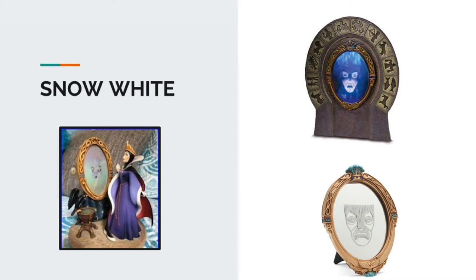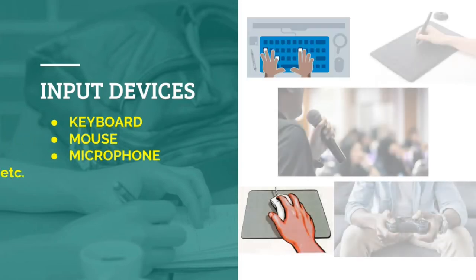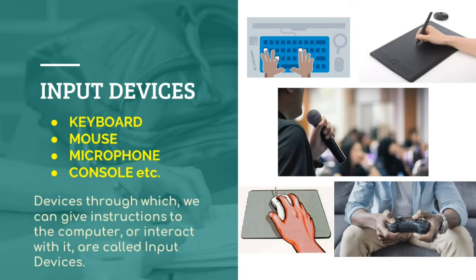A computer in the same way will listen to its user by accepting an instruction. This is called providing an input. Input can be given to a computer in a variety of ways — we can either do this by typing on a keyboard, clicking on something on the screen using a mouse, or speaking through a microphone, and some other ways too. Devices through which we can give instructions to the computer or interact with it are called input devices.